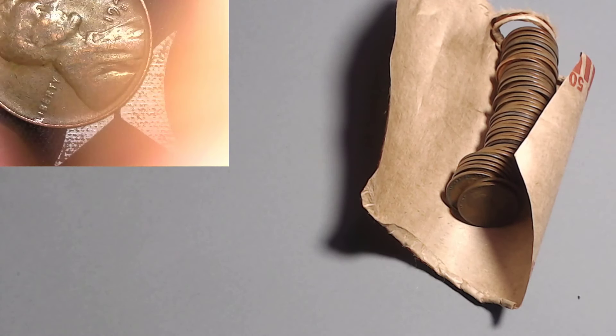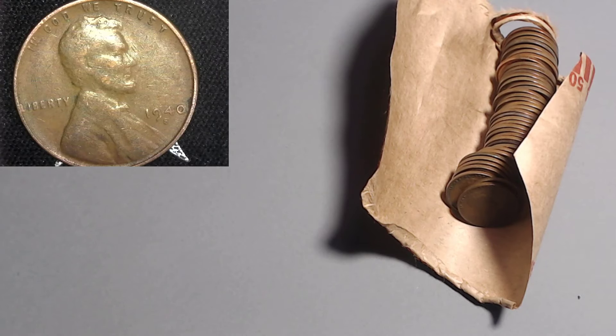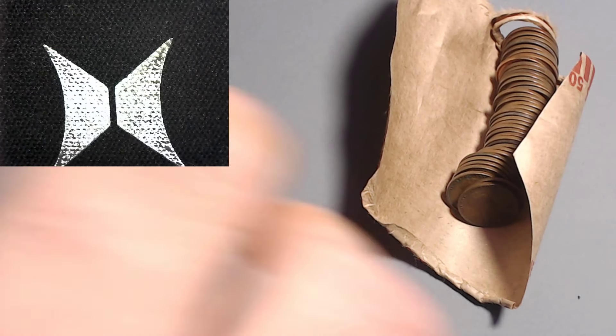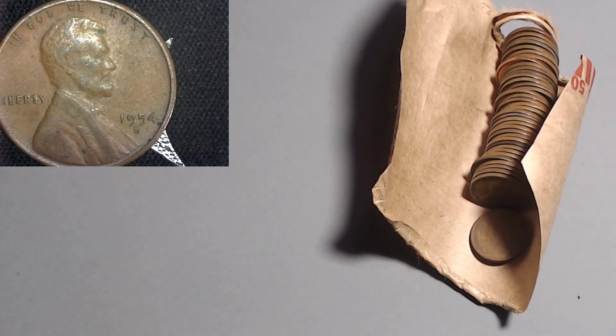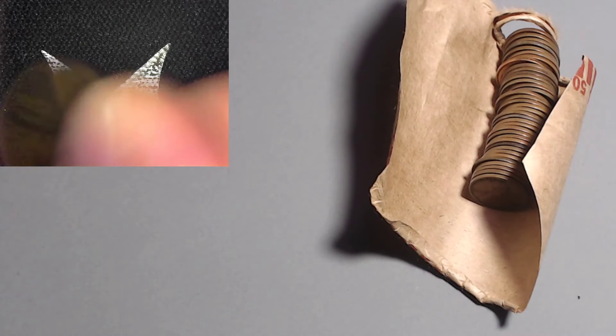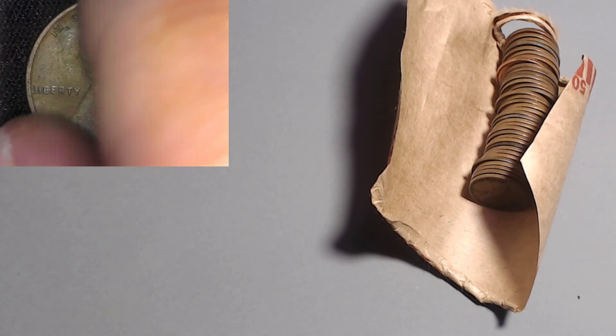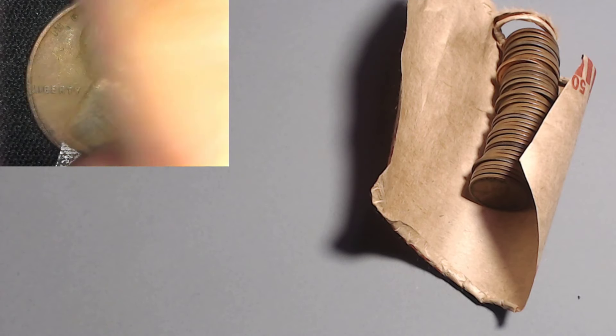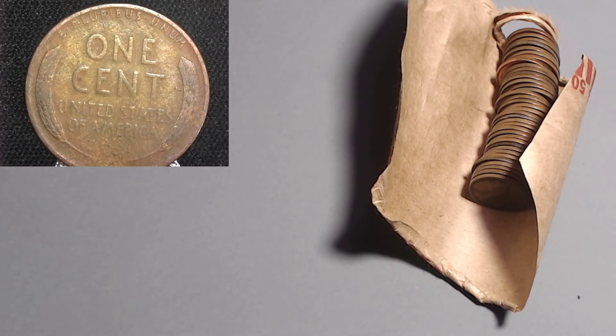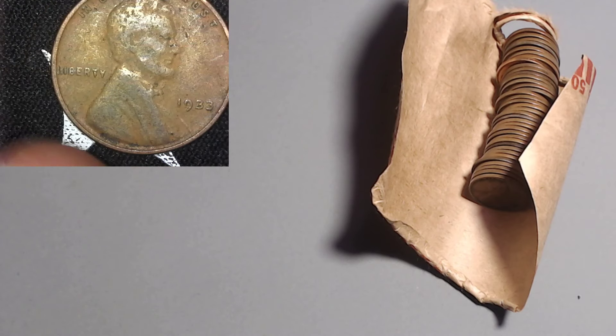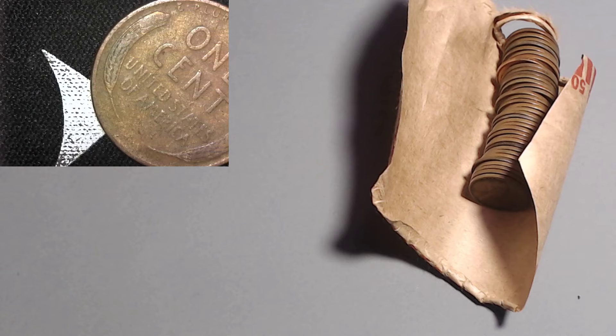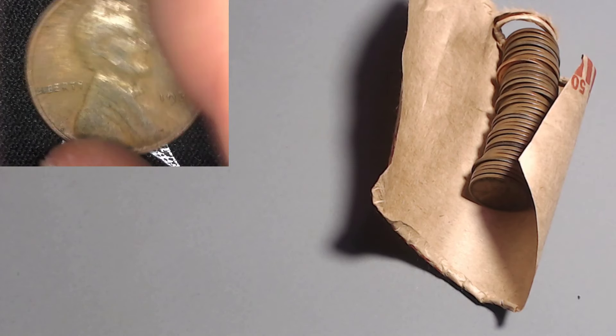And coming up is the 1940 out of San Francisco. The 40S, 112 million. And next one is the 1954 San Francisco with 96 million. Moving right along here, we got a 1933 Philly. The 1933 Philadelphia with only 14 million. I was not expecting that. It is a 1933 out of Philadelphia. Not in the worst shape either. I've seen worse. I will definitely take that 1933 Philly.